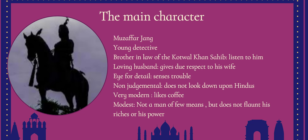We see Delhi through the eyes of the main protagonist, Muzaffar Jung, a young detective who is the brother-in-law of the Kotwal, Khan Sahib. Khan Sahib is a father figure to Muzaffar Jung, who listens to him very much. Muzaffar Jung is also a loving husband who gives great respect to his wife. He has an eye for detail, senses trouble sooner than others, and is not judgmental — he is quite a modern, democratic man who does not look down upon Hindus.